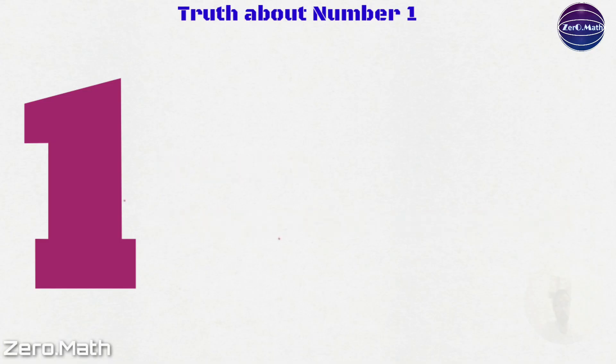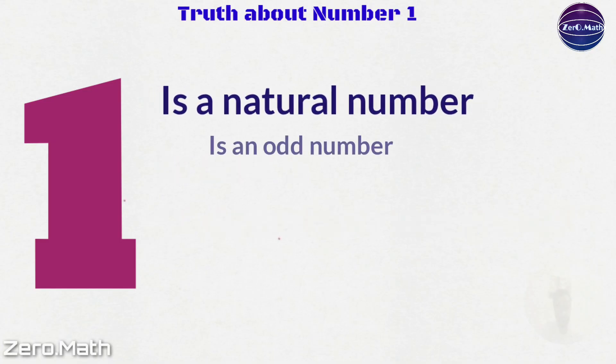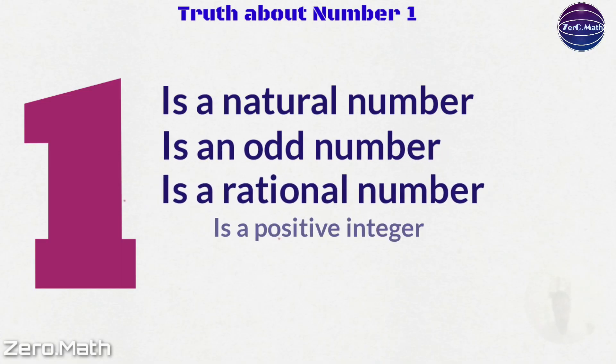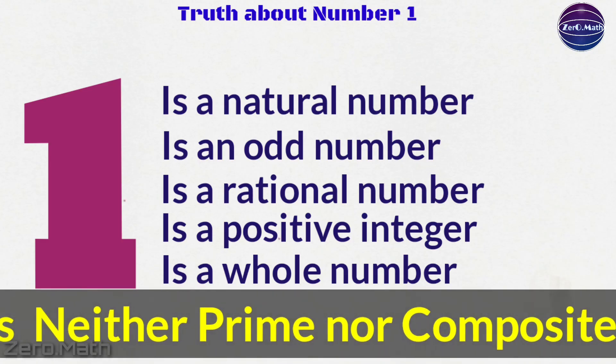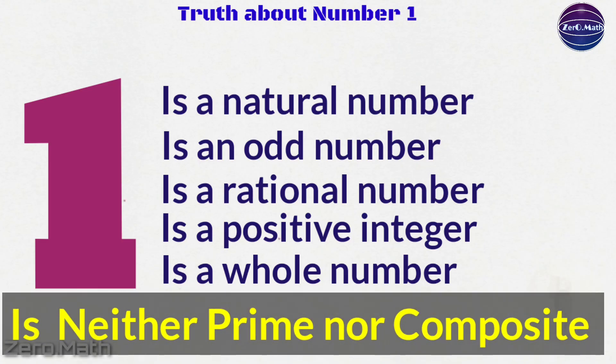So, number 1 is a rational number, it's an odd number, it's a rational number, it's a positive integer, it's a whole number. However, number 1 is neither prime nor composite.